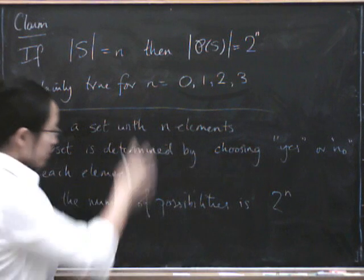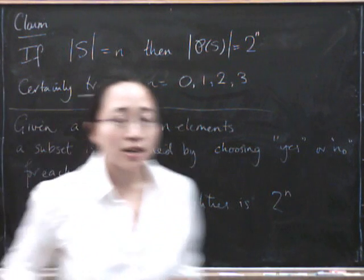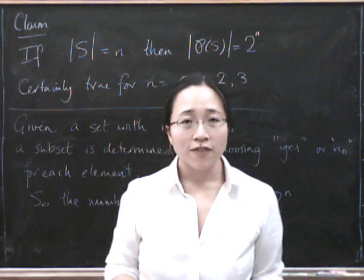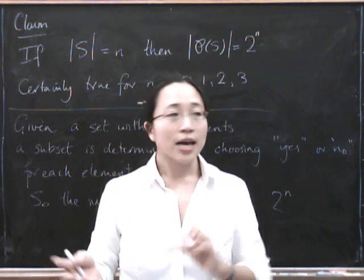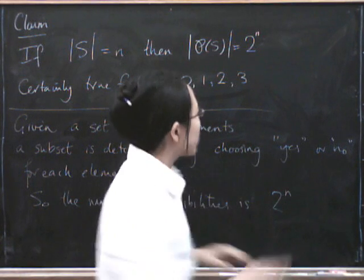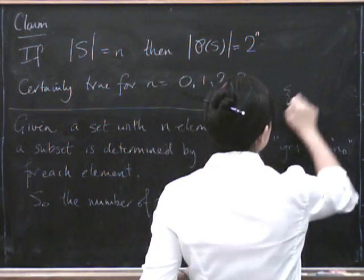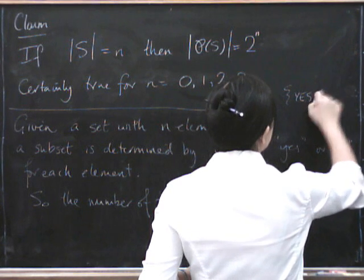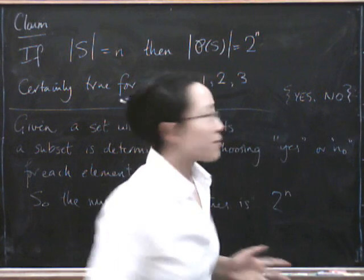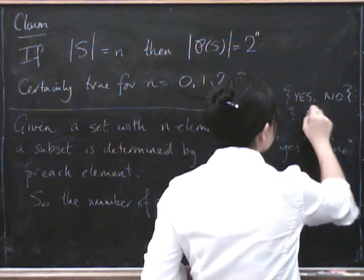In fact, what I've written down here is related to the idea of a characteristic function. So a characteristic function is where you take a set of things and you map it to a two-element set. So you can think of it as getting mapped to the set containing yes and no. But because that's not very mathematical, we often map it to the set {0, 1}.